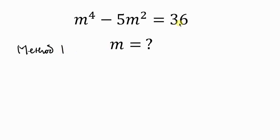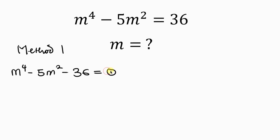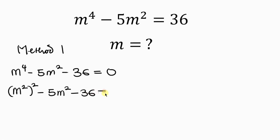For method 1, our first step will be to move 36 to the left-hand side, so that we have m to the 4th minus 5m squared. As 36 crosses to the left, it becomes minus 36, and this is equal to 0. m to the 4th is the same as m squared all raised to the 2, minus 5m squared minus 36 equal to 0. Now we have a quadratic equation.